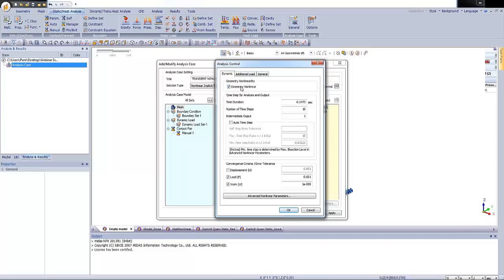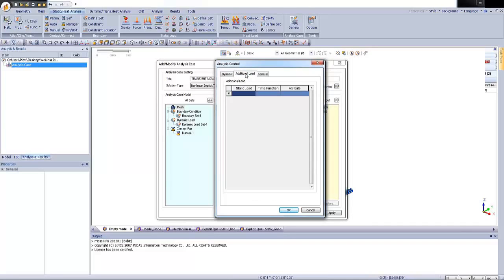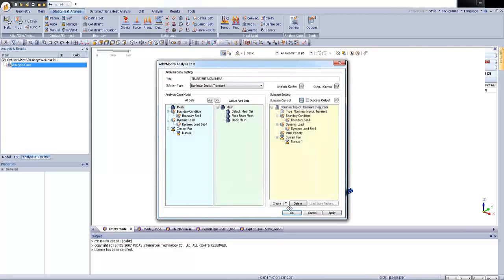Okay. So we assign the dynamic properties. And right now I'm clicking on additional tab. Because we have to convert our gravitational loading into the dynamic load. So time function will be constant. And attribute will be global time. Okay. Now I'm drag and dropping this dynamic load set under the initial velocity. As you remember we defined this parameter.